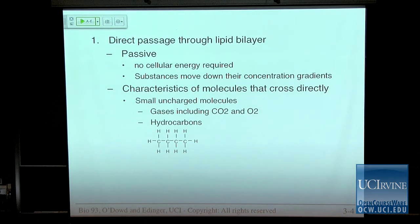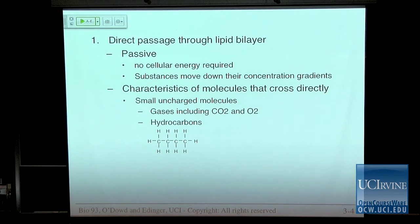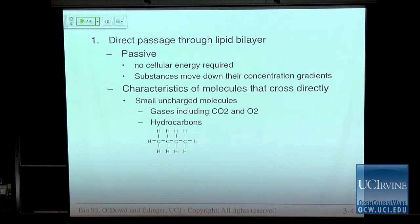Direct passage through the lipid bilayer is always passive — does not use cellular energy, at least directly. Substances can only move down their concentration gradients, so things move in and out of the cell, but the direction they're moving is governed by the concentration gradient of that molecule. Characteristics of molecules that cross directly are, in general, small uncharged molecules. For example, gases including CO2 and oxygen go relatively easily across the hydrophobic tail region of the lipid bilayer. That's where the phospholipid tails are — it's hydrophobic — and these are uncharged, so they're pretty good at going through hydrophobic regions.